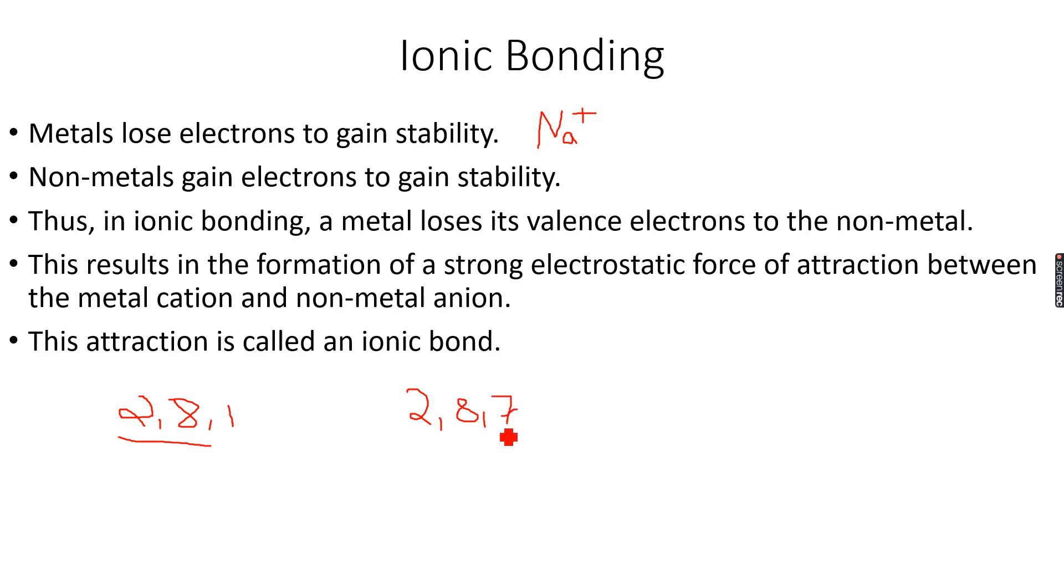What it will do is it will gain one electron because it has two options: it can either lose seven electrons completely to gain stability or it can gain one electron to gain stability.